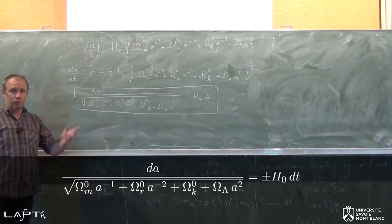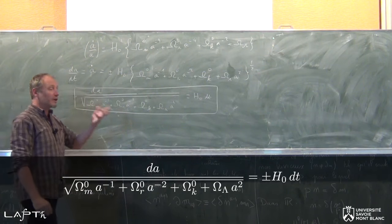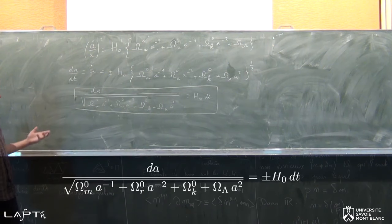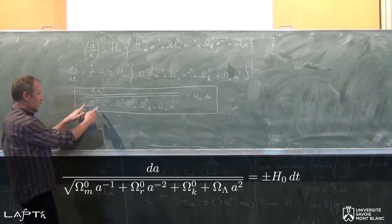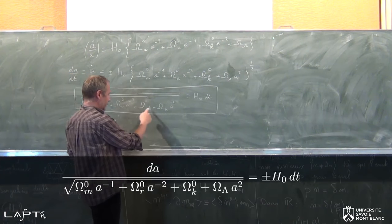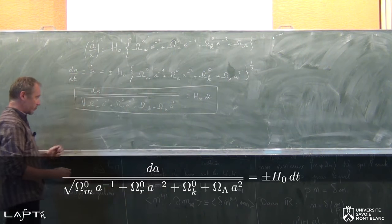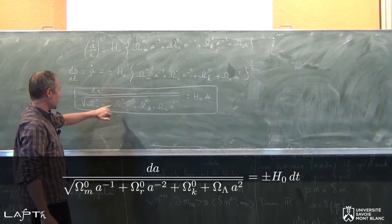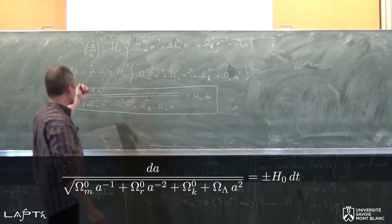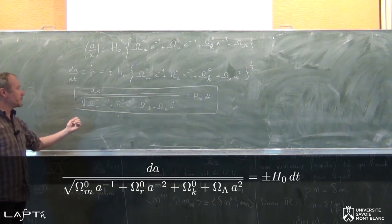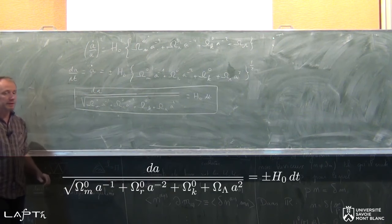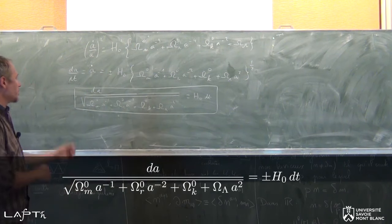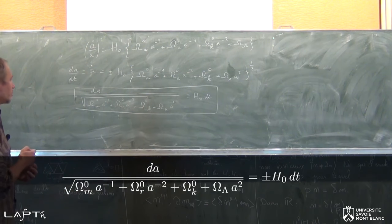On pourrait tenter sa chance et essayer de résoudre cette équation différentielle-là, sachant que les Ω sont vraiment des constantes. Les seules choses qui varient, c'est la variable A. Vous n'y arriverez pas — il n'y a pas, dans le cas général, d'expression analytique. Ceci dit, ça se fait très bien numériquement : si vous disposez d'un bon logiciel de mathématiques, il vous résout numériquement cette équation différentielle et vous donne A(t) ou t(A) sans aucun problème.